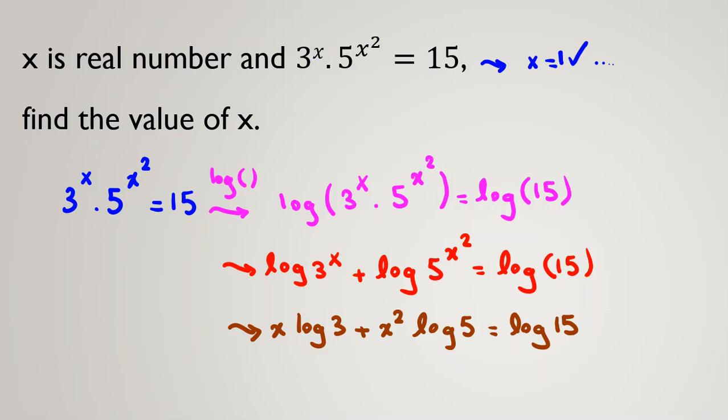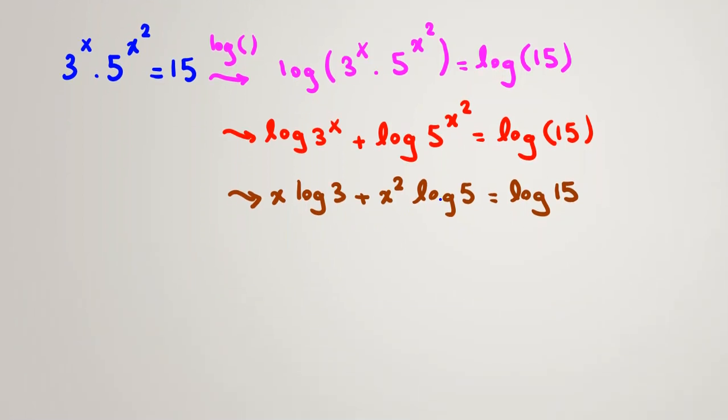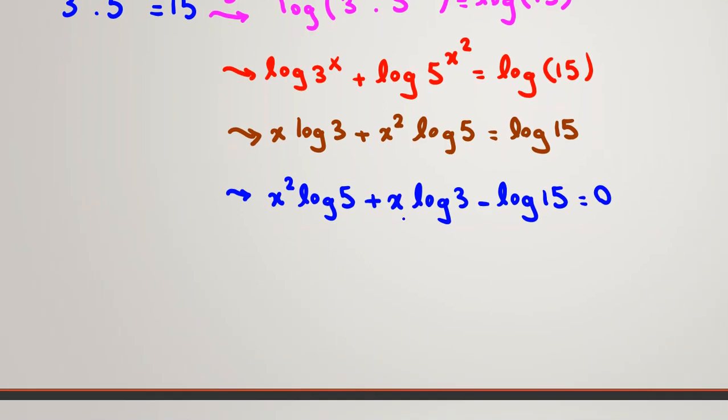Now here, we know one root. Here should be x equals 1. So let's check. I write x² log 5 plus x log 3 minus log 15 equals 0.